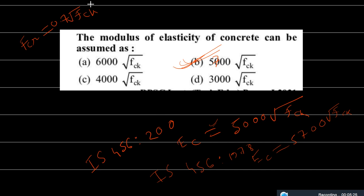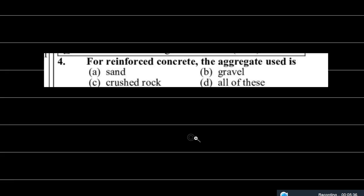The next question: which aggregates are used in reinforced concrete? For reinforced concrete we can use sand, crushed rock, and gravel as aggregates. Gravel is nothing but coarse aggregate, and crushed rock is fine aggregate. So we use a mixture of coarse aggregate, fine aggregate, and sand. Option D is the correct answer for this question.